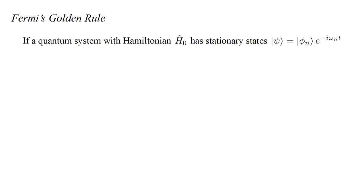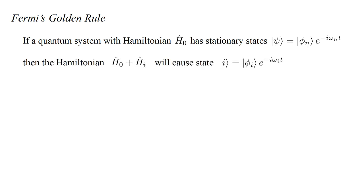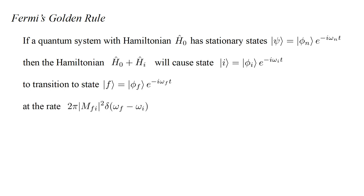In video four we develop Fermi's golden rule. If a quantum system with Hamiltonian H-hat zero has stationary states phi_n e^{-i omega_n t}, then adding an interaction term H-hat_i to the Hamiltonian will cause an initial state i to transition to a final state f at a rate proportional to the squared magnitude of the matrix element M_{fi}, where H-hat_i operates on the initial state.